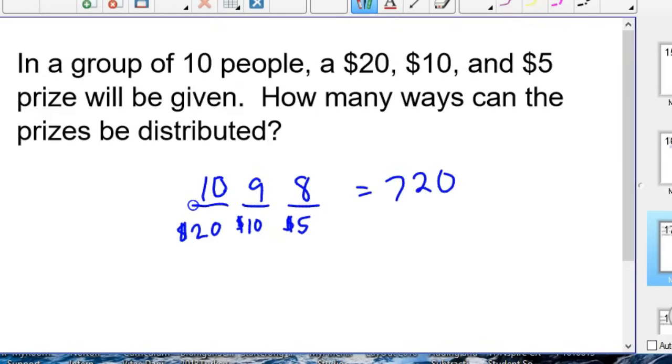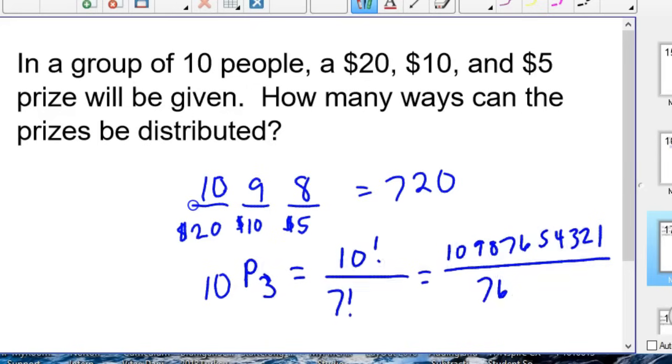If you did it with the permutation formula, it would be 10P3, which would be 10 factorial divided by 10 minus 3, which is 7 factorial. And if you did that, 10, 9, 8, 7, 6, 5, 4, 3, 2, 1 is 10 factorial. 7, 6, 5, 4, 3, 2, 1 is 7 factorial. You could cross those out, and you're left with 10 times 9 times 8. So that's using the formula. You could also use a calculator to solve that. And at the end of the video, I'll show you the calculator method.